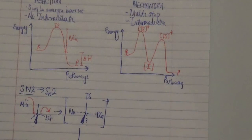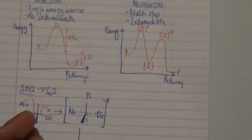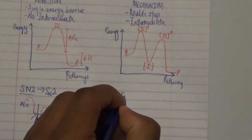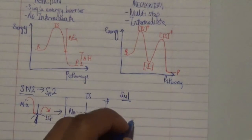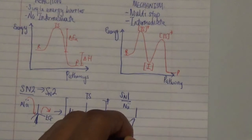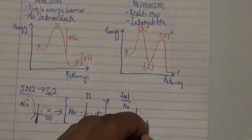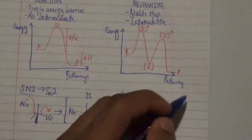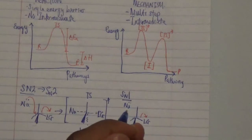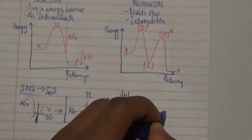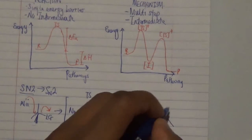On the other side, a stepwise mechanism involves an intermediate where the leaving group actually leaves first before the nucleophile comes in to attack. This is the SN1 reaction. In an SN1 reaction, the nucleophile does not attack first — instead, the leaving group departs, and we reach a transition state that forms a trigonal planar carbocation intermediate with a positive charge.